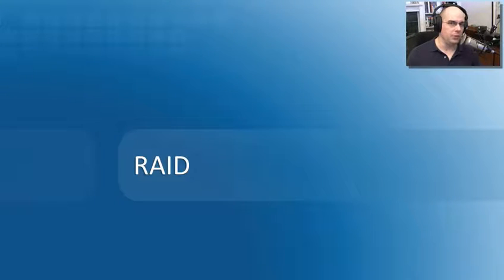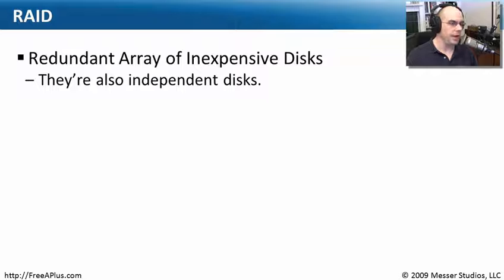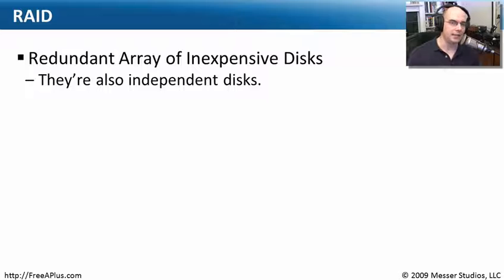RAID is an abbreviation — R-A-I-D. It stands for Redundant Array of Inexpensive Disks. Now, the disk industry said they didn't like calling these inexpensive disks, so it's sometimes referred to as a Redundant Array of Independent Disks. At one time, disks were very expensive, so it made sense to call them inexpensive — you could take a lot of low-cost disks, put them together, and have the same redundancy and capabilities as much more expensive disks. As a result, we all moved to these inexpensive disks, so the term became a bit redundant.